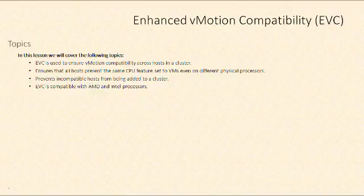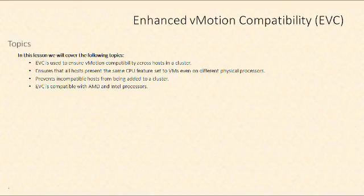In this lesson, we're going to cover a few topics. We'll talk about how EVC is used to ensure that all of the hosts in a cluster are vMotion compatible. This is ideal if you have a DRS cluster that's going to be automatically moving virtual machines around using vMotion. It also prevents incompatible hosts from being added to a cluster — if a new host is not vMotion compatible, EVC won't allow you to add it.